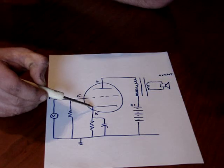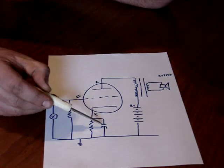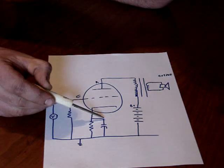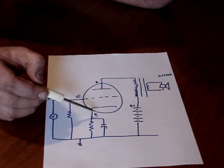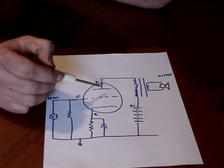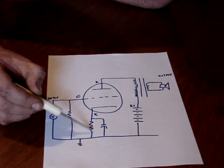This is the cathode resistor, which holds the cathode slightly above ground. And this capacitor was added when people first designed these amplifiers. What that does is allow the AC signal going through the tube to go directly to ground instead of having to go through this resistor.